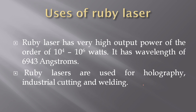Now, the uses of Ruby laser. Ruby laser has a very high output power of the order of 10^4 to 10^6 watts. It has a wavelength of 6943 angstroms. Ruby lasers are used for holography, industrial cutting, and welding. These are the few uses of the Ruby laser.